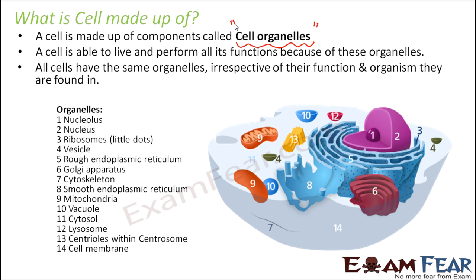Let us look at the different organelles present inside the cell. You can assume the cell is like a sphere cut from the middle, so you can see its interior. Here you can see the different organelles. This is the nucleolus, and the big purple structure is the nucleus — located somewhere around the centre of the cell, with the nucleolus at its centre. The ribosomes are the little blue dots you see here.